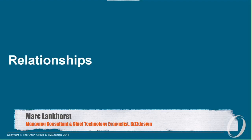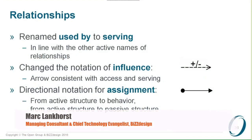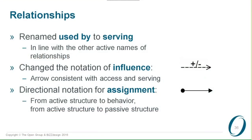First of all, we improved the relationships. One of them is a renaming of the 'used by' relationship to 'serving' — the only relationship that had a sort of backwards, passive name. This had to do with the direction of the relationship. It's very important that ArchiMate relationships point in a certain direction, and especially for 'used by' there was sometimes some confusion around that. The idea is that this relationship points towards the user of a certain service.